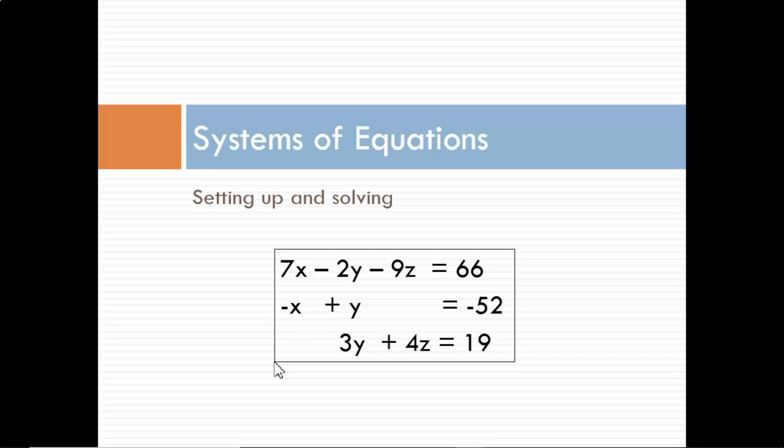A system of equations is a set of equations that share variables. In this example we see three distinct equations, but they share the same three variables. If, say, y equals 5, then we know it equals 5 in all three of these equations.